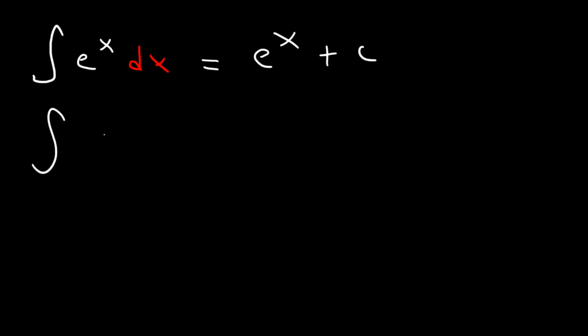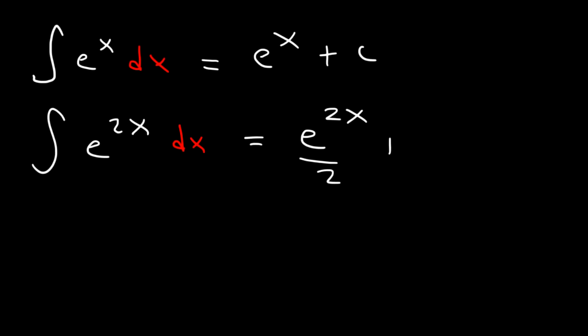What is the antiderivative of e to the 2x dx? This is going to be e to the 2x divided by the derivative of 2x, which is 2, plus c. That technique works only if you divide it by a constant — if you divide it by a variable, it's not going to work.